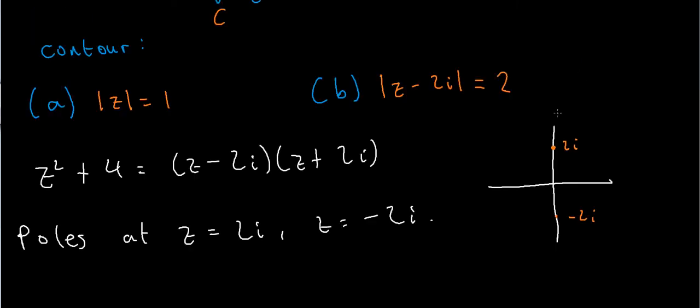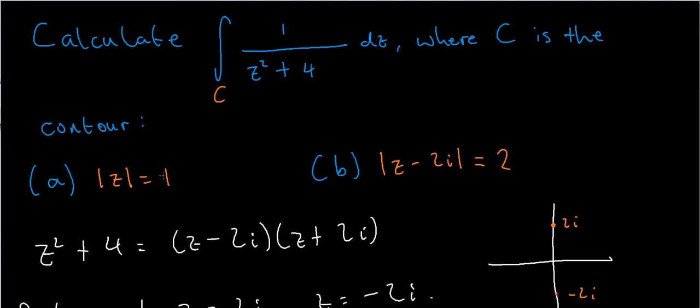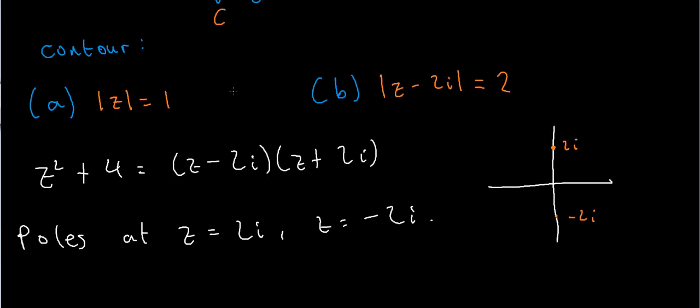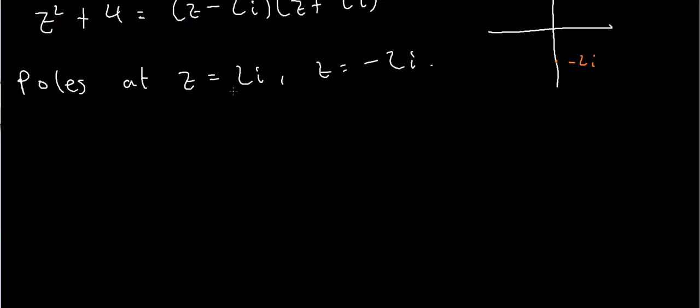So now that I've found the poles, what happens when I integrate over these two separate contours? Well, first let's look at the contour mod z equals 1. So let me draw the contour on a bigger diagram. So the circle mod z equals 1 is just a circle of radius 1 centred at the origin, which looks something like this.